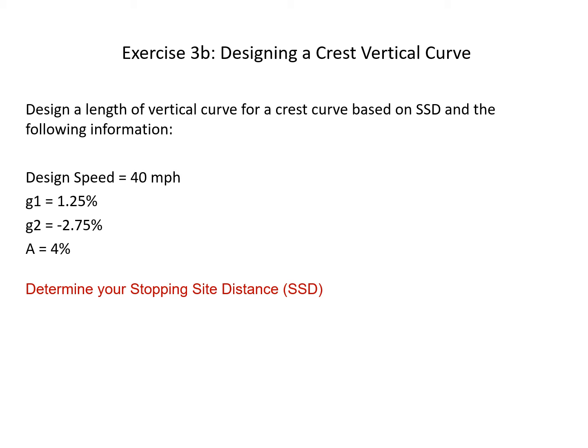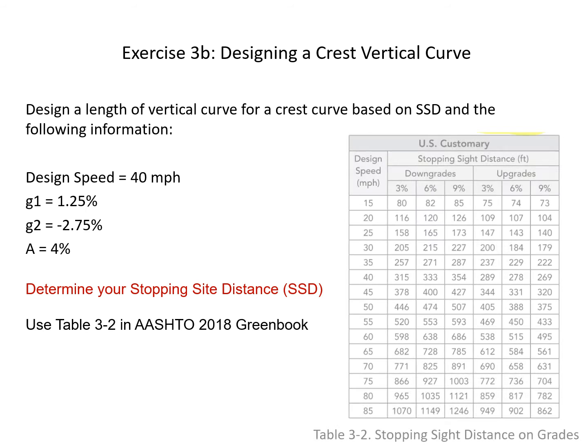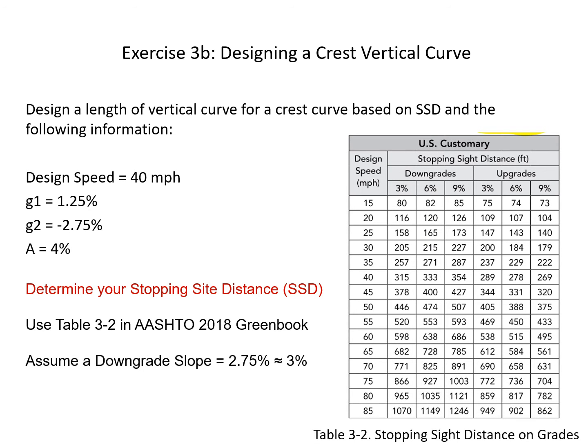Next, we're going to determine the stopping sight distance. We're going to utilize Table 3-2 in the AASHTO 2018 Green Book. We're going to assume a downgrade slope of 2.75%. Using the chart, the closest percent is the 3% value. When we look at the design speed and the 3% downgrade, we get a stopping sight distance of 315 feet, and we'll use that for our sight distance.